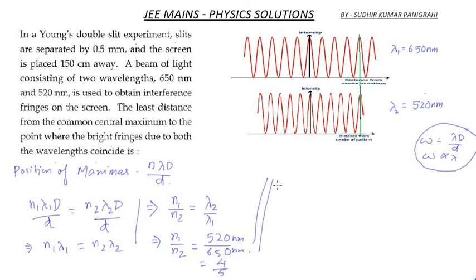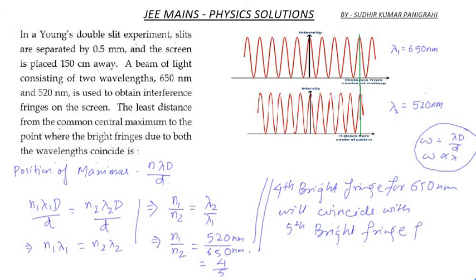Now what does this imply? This implies that the fourth bright fringe for 650 nanometer will coincide with the fifth bright fringe for 520 nanometer.